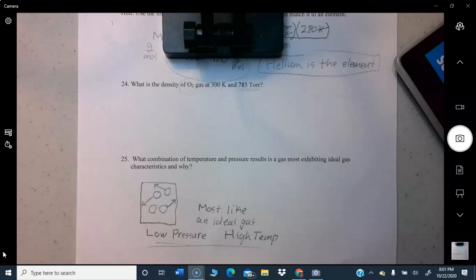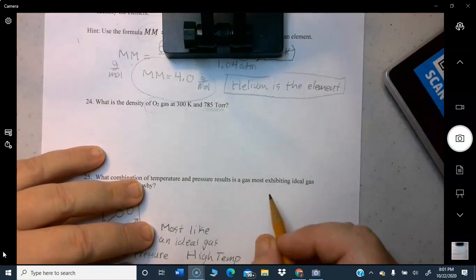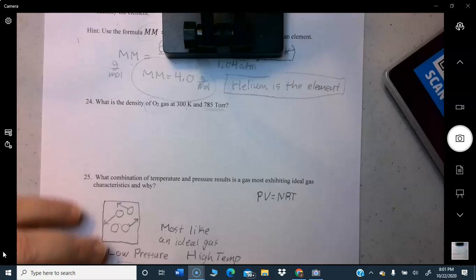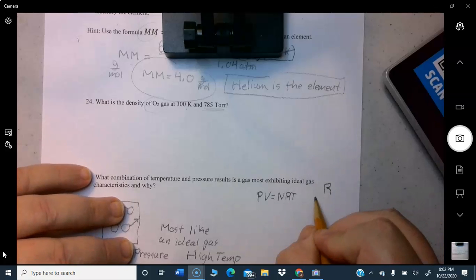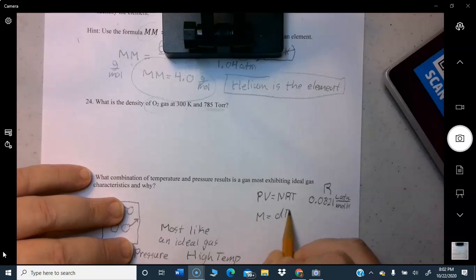Let's do one more thing. We're done with this assignment. This is important to do. PV equals NRT, which value of R do you use for that? You use this one: 0.0821 liter atmospheres over mole Kelvin. Molar mass equals dRT over P, which one do you use? Same one.